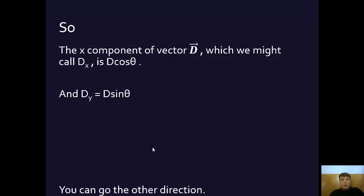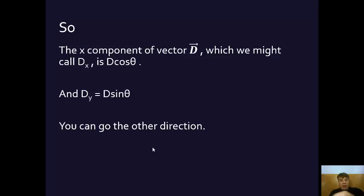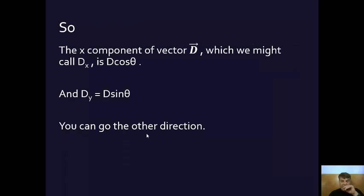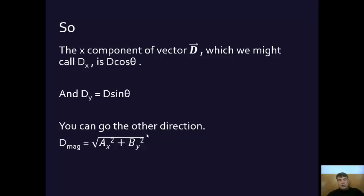Of course, you can go the other direction — if you have the components and want to find the resultant. This is straightforward Pythagorean theorem. DX squared plus DY squared, and then take the square root of that sum, and you'll get the magnitude of vector D — the hypotenuse. This is basic geometry.